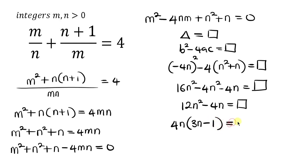And this must be a perfect square. 4 is already a perfect square. So n times (3n - 1) must also be a perfect square.